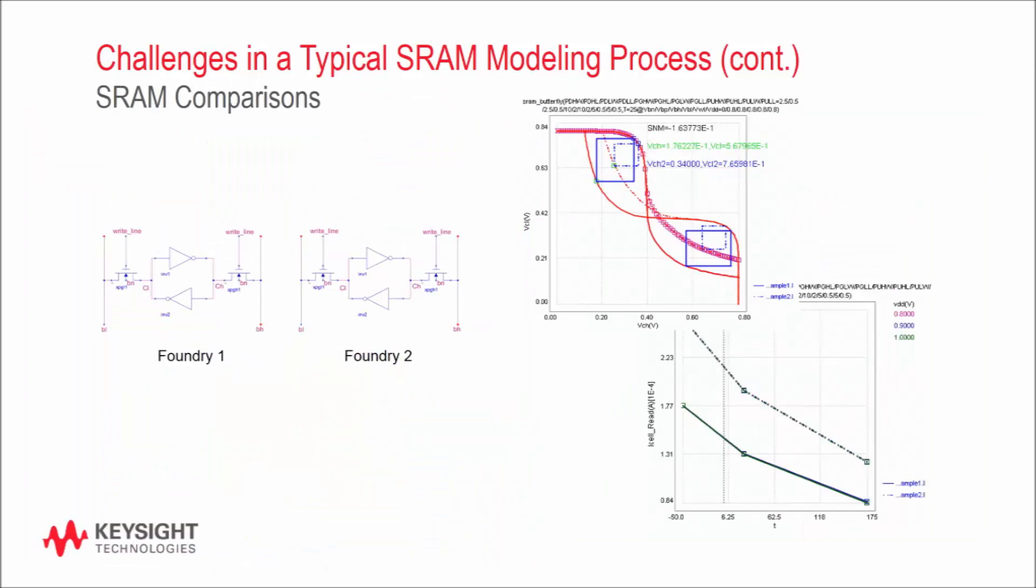Additionally, MBP enables us to perform a SRAM model comparison on all of the graphs. With that capability, modeling engineers can easily compare SRAM cells between process nodes and even foundries.